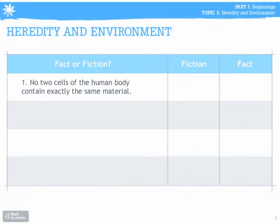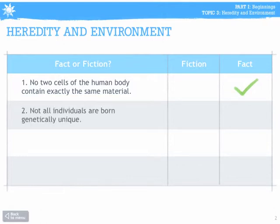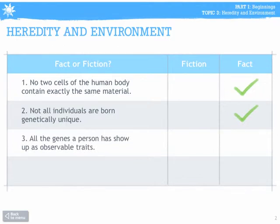The first part is Fact or Fiction. Number one: no two cells of the human body contain exactly the same material. This is actually true. Number two: not all individuals are born genetically unique. This also is true — think about identical twins. Number three: all the genes a person has show up as observable traits. This is not true. A lot of us have recessive genes that we're not even aware of.